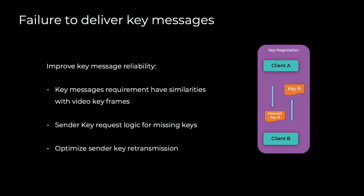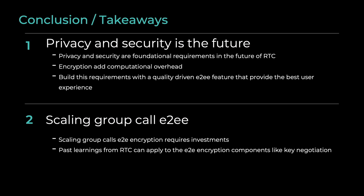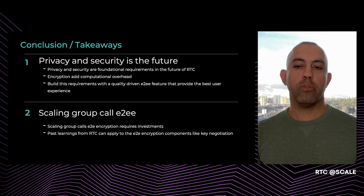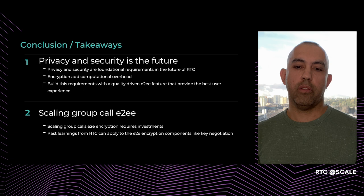Key message requirements have a lot of similarities with video keyframes. Similar to a keyframe, if a key message is missing, media cannot be rendered and played. There has been a lot of work and research on handling missed video keyframes, such as optimized retransmission and keyframe requests. We can use similar approaches for missing key messages to request missing keys and improve transmission. In conclusion, privacy and security are fundamental requirements for the future of RTC. Encryption adds computational overhead to call initiation and throughout the call. Our goal is to build these requirements with a quality-driven end-to-end encryption feature that provides the best experience for users. Scaling group calls with end-to-end encryption requires investment in and optimizing various components of encryption, and past learnings from RTC can be applicable. Thank you for listening.